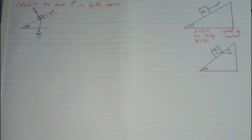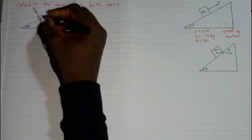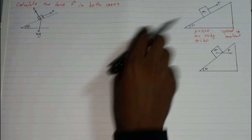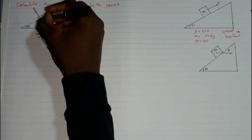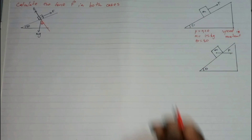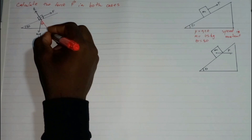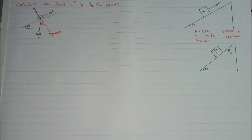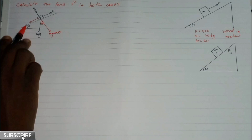If you're not familiar with resolving, check one of my videos in my physics playlist. Now, since the object is moving along the plane and not moving upward from it, we have a component of weight perpendicular to the slope. By geometry, this angle is theta, and that force is mg cosine theta.